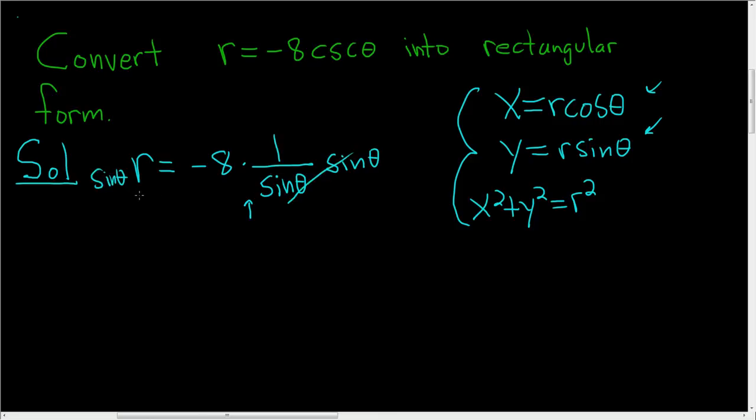And that will give us the r we need because now on the left hand side we have r sine theta. And on the right hand side we just have negative 8.